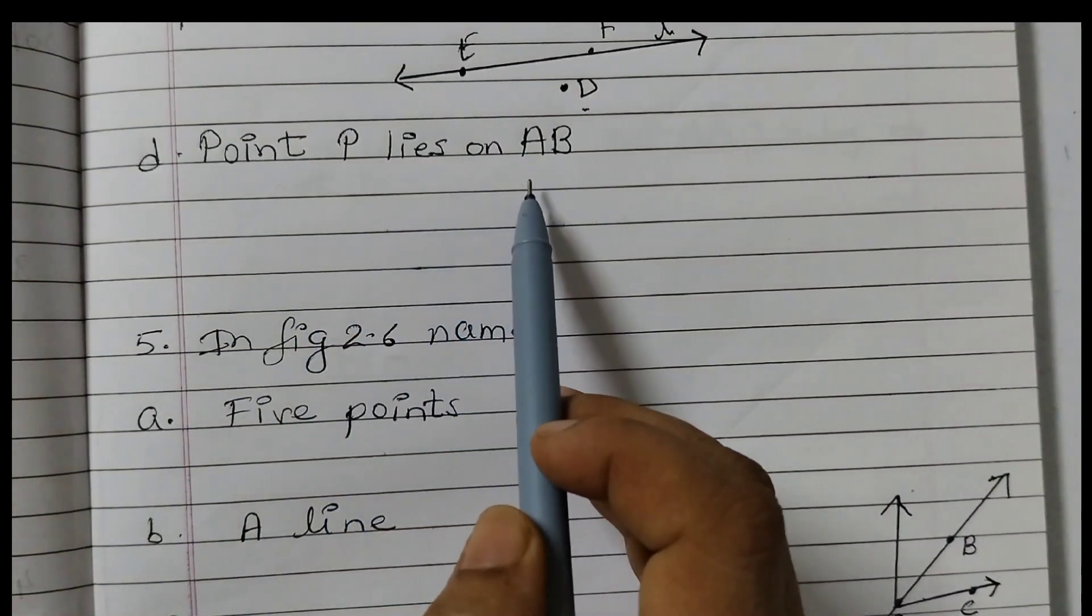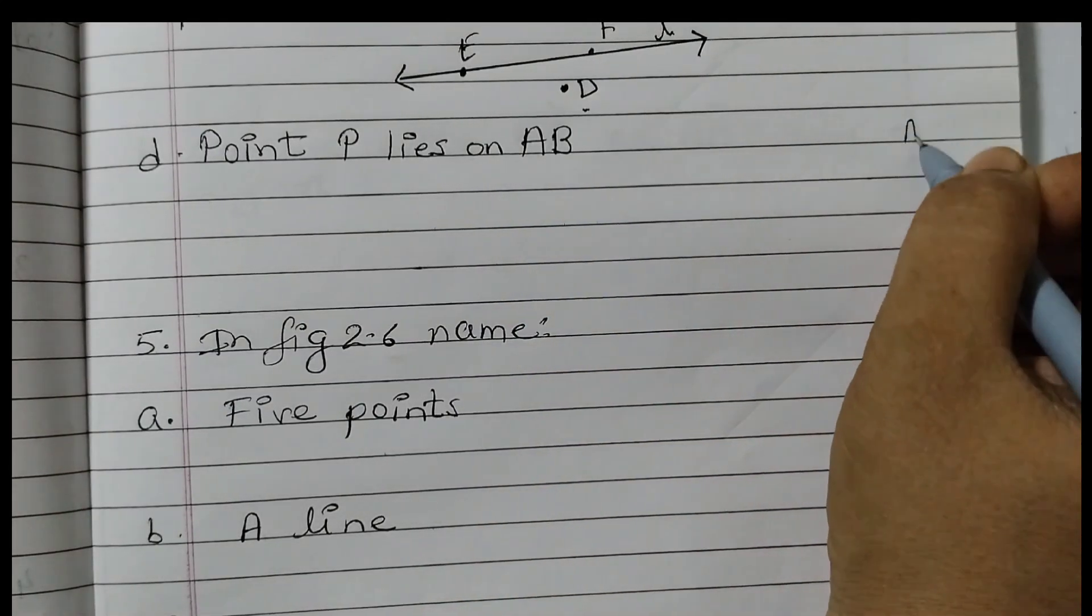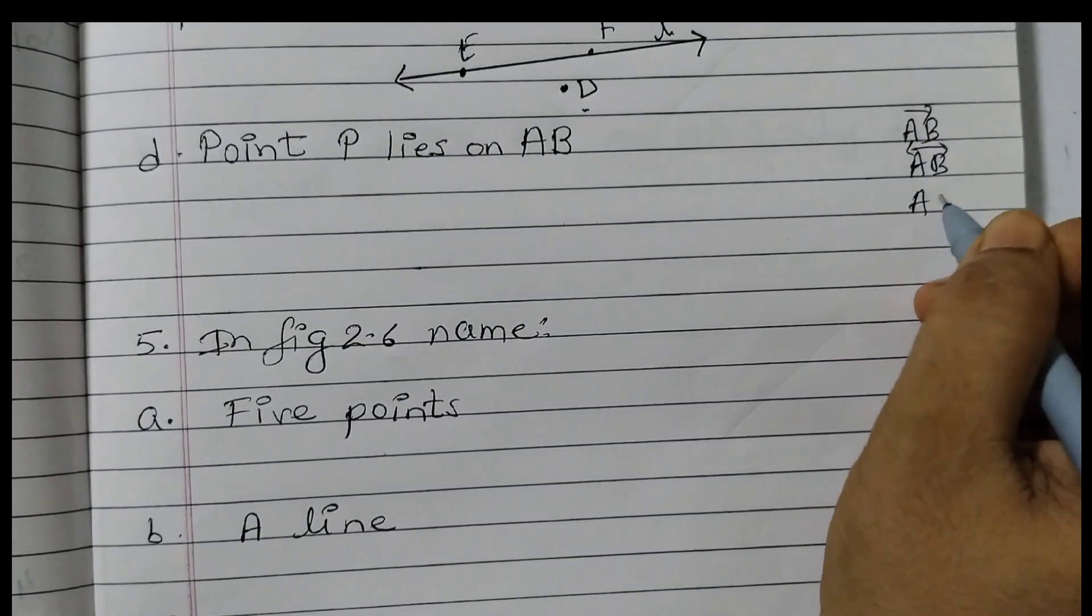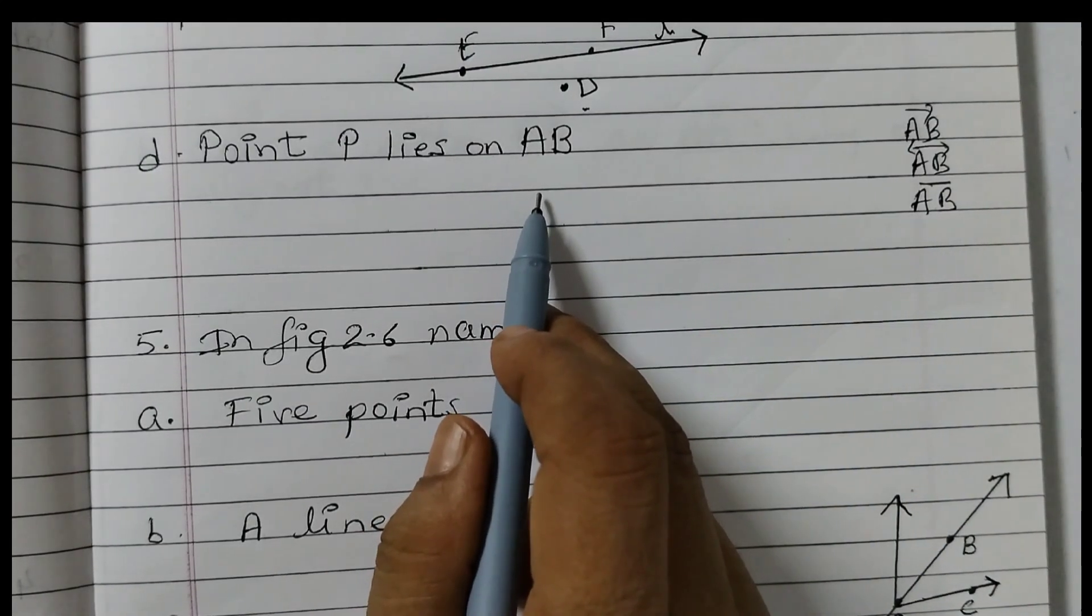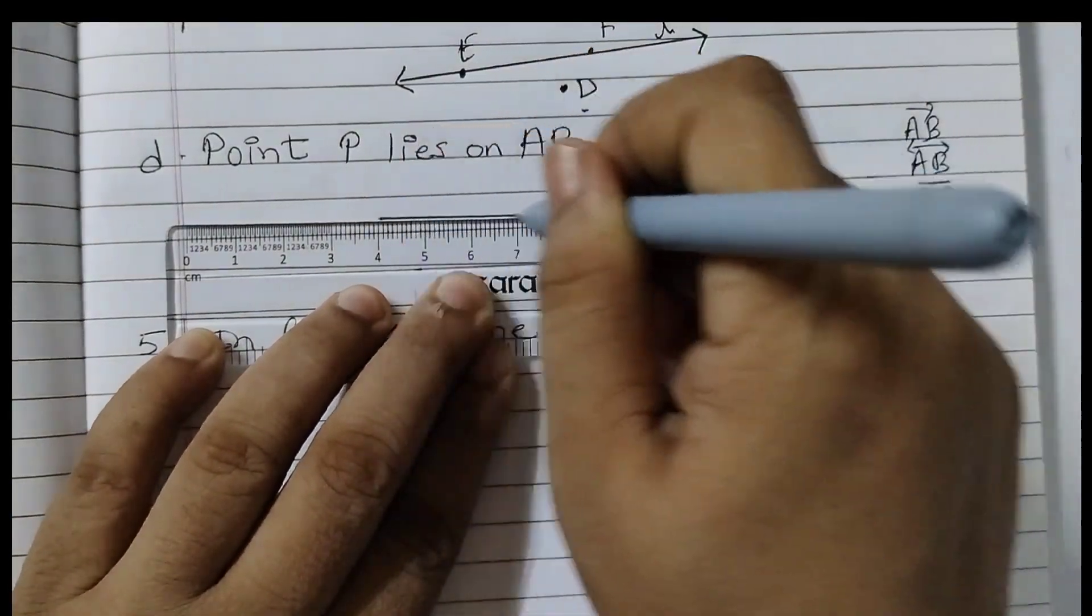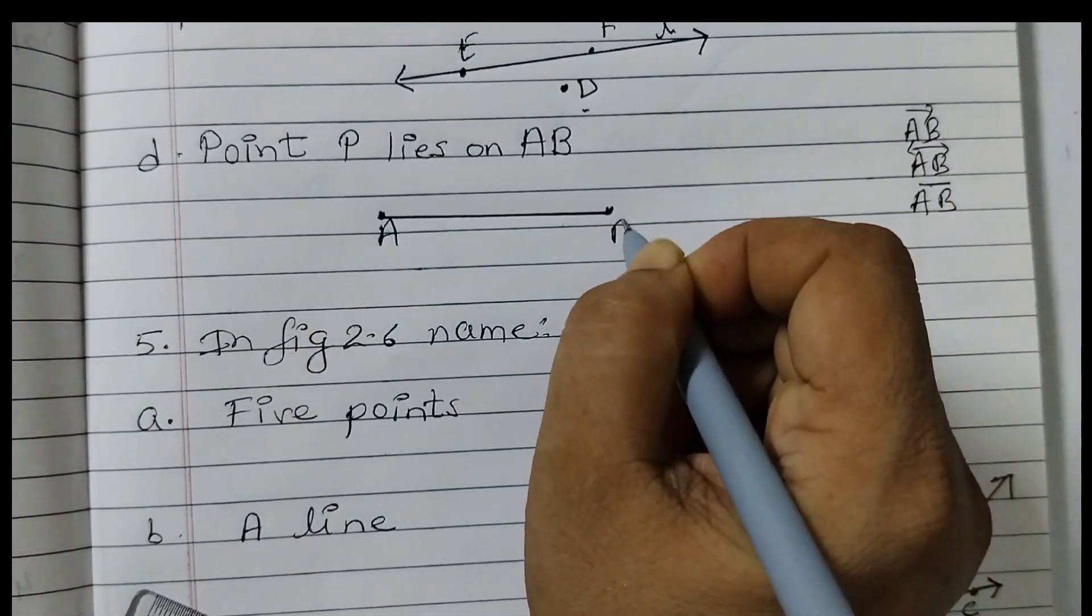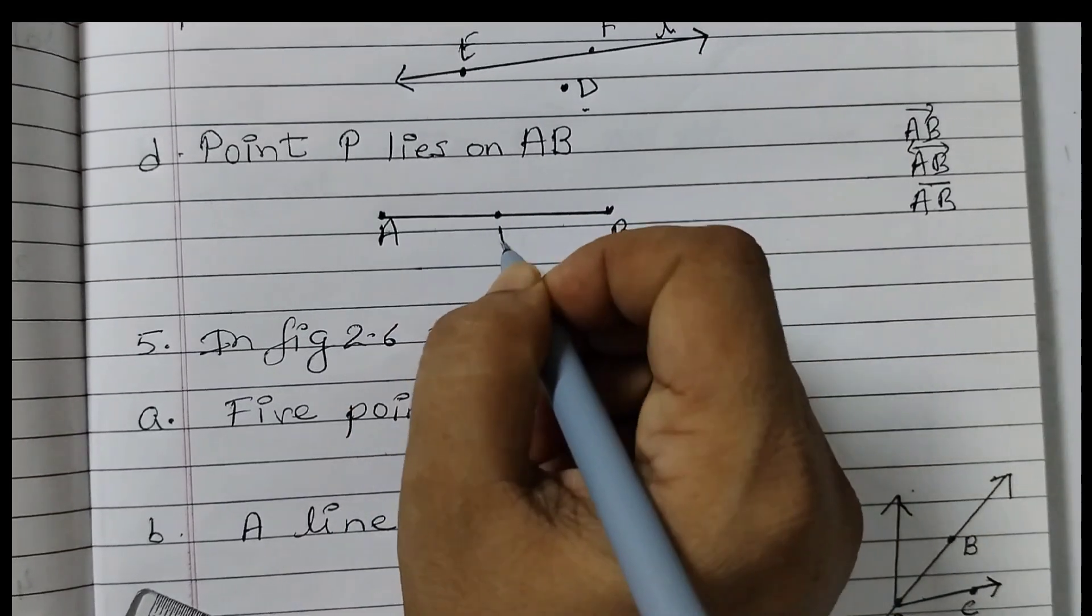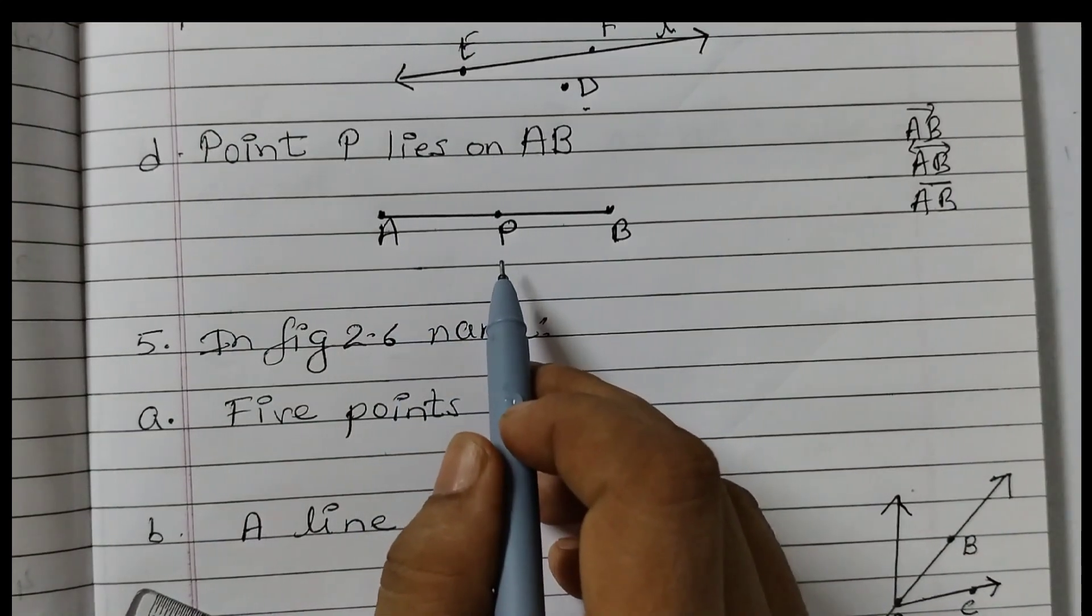Point P lies on AB. Now on top of AB we do not have any symbol. Like usually we have like this, Ray AB or for line we show like this. For segment we show like this. But here nothing is given in the textbook. So we will take this as a line segment AB. So for that, take two points A and B with fixed end points. Point P lies on AB. So any point you can put here. You can put the point anywhere between A and B. And this is point P.